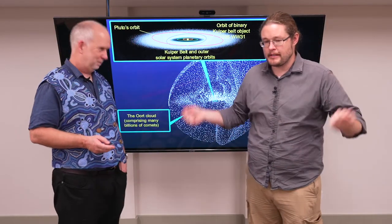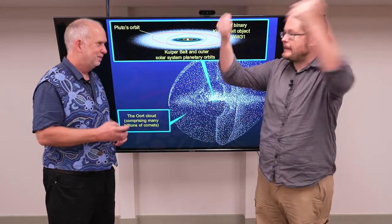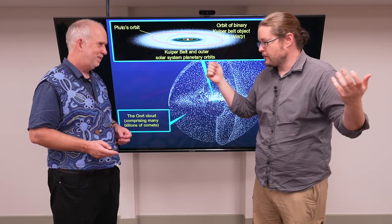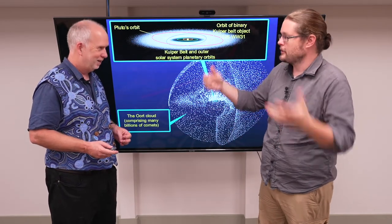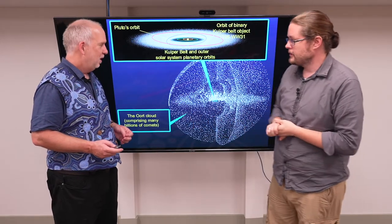All right. So essentially every time you get something passing through, you kind of mix it. So the stuff rises to the top and goes to the outer Oort cloud, but we still have stuff in the inner Oort cloud.